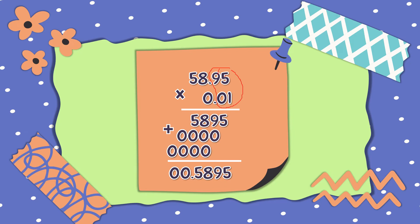So we have 1, 2, 3, 4 — and 1, 2, 3, 4. So the answer is 0.5895 ten-thousandths. Again, look at the differences and the similarities.